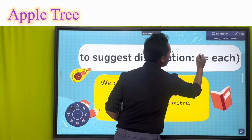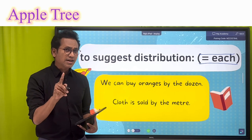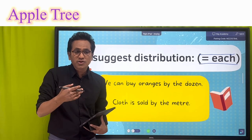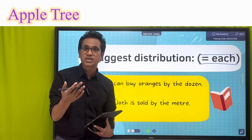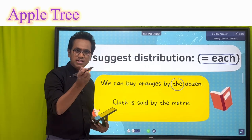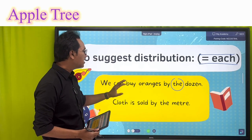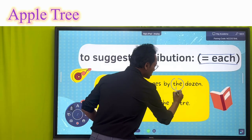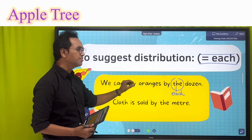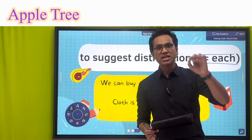The first usage is to suggest distribution — meaning 'each.' This is generally not known to many people. For example, we can buy oranges 'by the dozen' — meaning each dozen. Similarly, cloth is sold 'by the meter' — by each meter. This is the distributive use of 'the.'